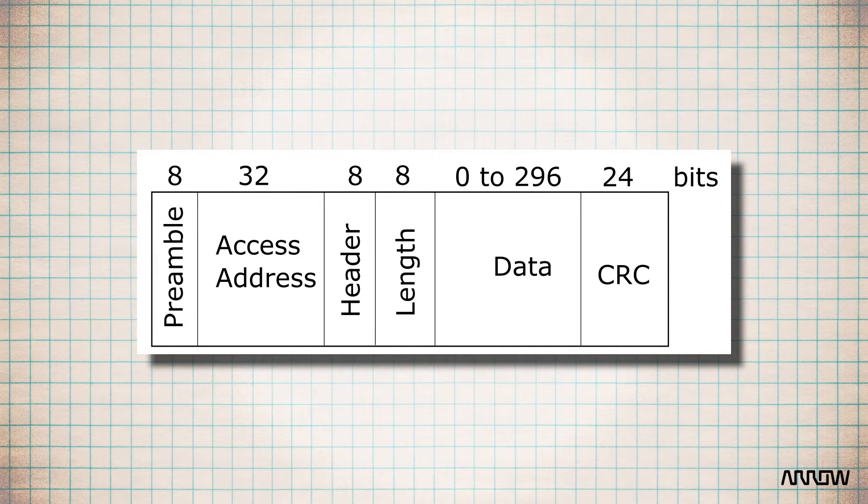Now both packets have a similar structure split into six blocks. There's a preamble of 8 bits, an access address of 32 bits, a header of 8 bits, a length of the payload also coded in 8 bits. And in Bluetooth 4.1, data of 296 bits max for advertising packets and 248 bits max for data packets. At the end of it all, there's a cyclic redundancy check or CRC coded with 24 bits. This helps to prevent collisions.